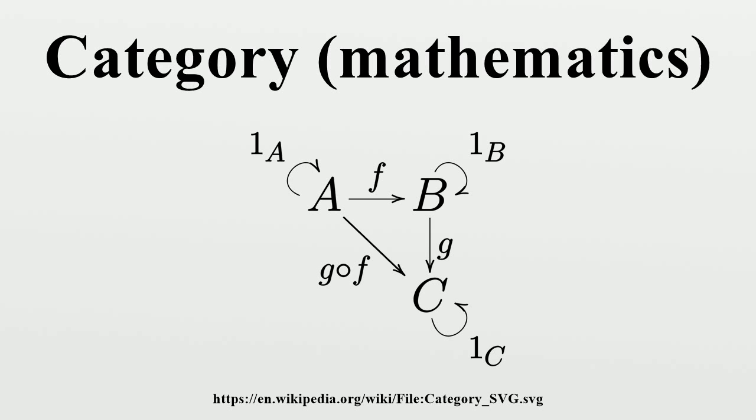Construction of new categories. Dual category: Any category C can itself be considered as a new category in a different way. The objects are the same as those in the original category but the arrows are those of the original category reversed. This is called the dual or opposite category and is denoted C^op. Product categories: If C and D are categories, one can form the product category C times D. Such pairs can be composed component-wise.